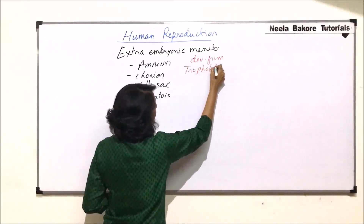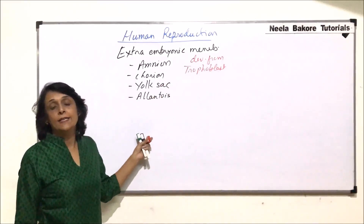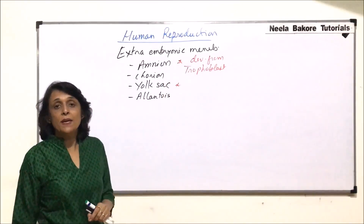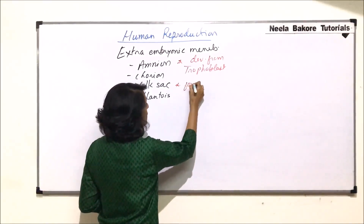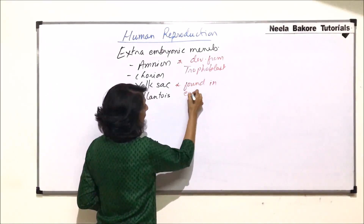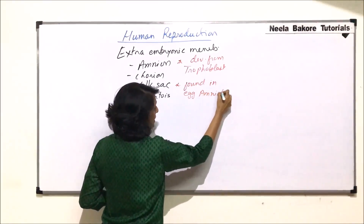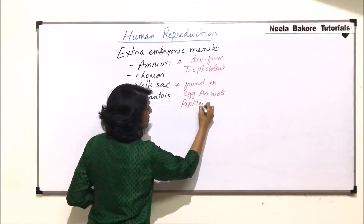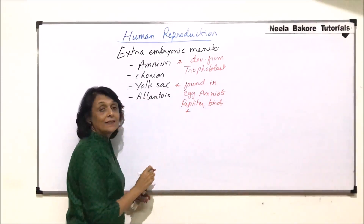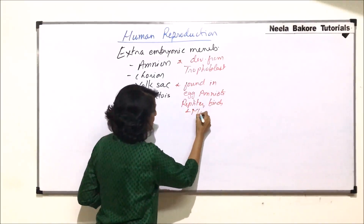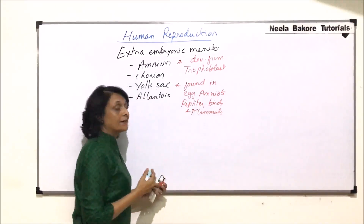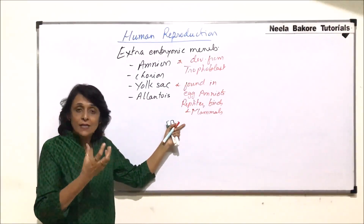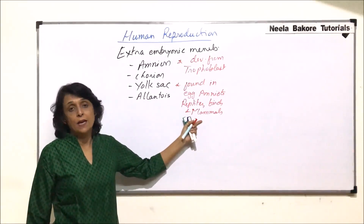Trophoblast is the layer which gives rise to these extra-embryonic membranes. One more important thing: these extra-embryonic membranes are found in the eggs of amniotes. The amniote group includes reptiles, birds, and mammals. So there are three groups which are considered as amniotes, and in these embryos there are four extra-embryonic membranes.